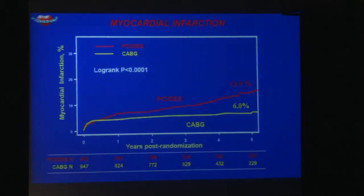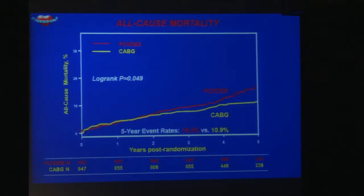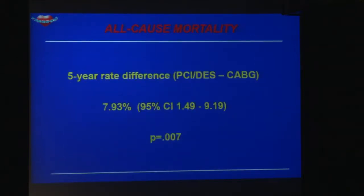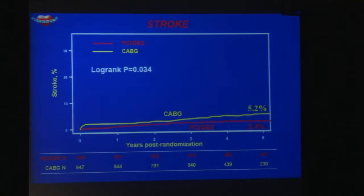Myocardial infarction was also significantly in favor of CABG. The rate of infarction at five years was 13.9% for PCI with drug-eluting stents and 6.0% for CABG — very significant. All-cause mortality at five years was 16.3% in the PCI group and 10.9% in the CABG group. Stroke was slightly increased in the bypass group, at 5.2% at five years, compared to 2.4% in the PCI group.